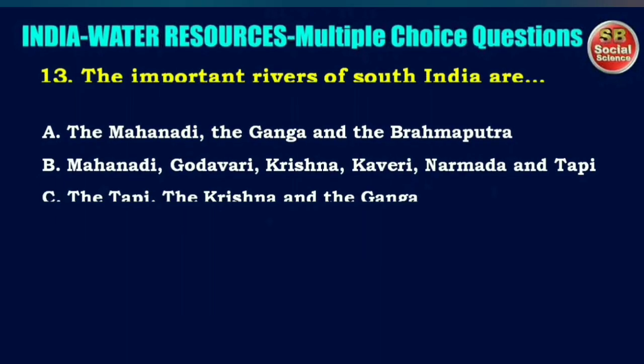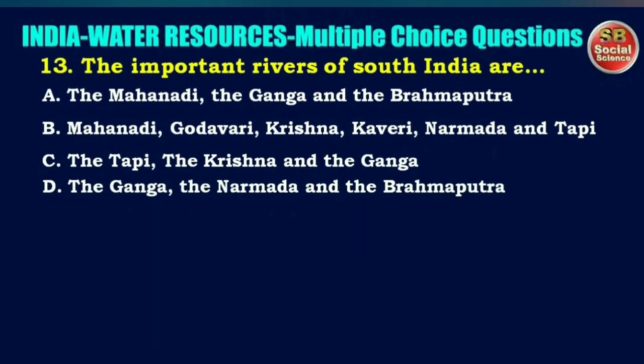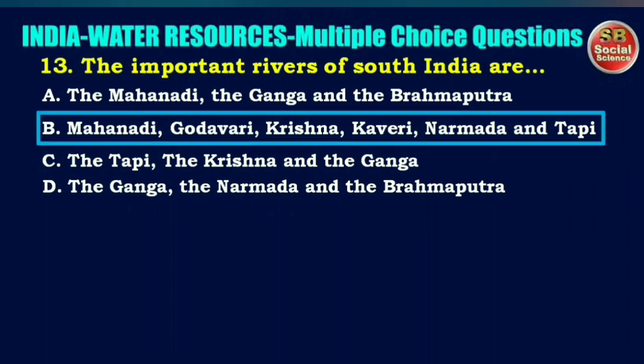The important rivers of South India are — options are the Mahanadi, Ganga and Brahmaputra, or Mahanadi, Godavari, Krishna, Kaveri, Narmada and Tapi. The right answer is option B: Mahanadi, Godavari, Krishna, Kaveri, Narmada and Tapi rivers.